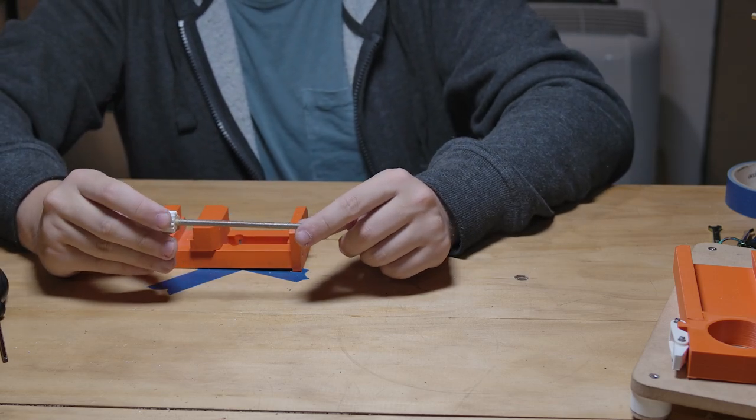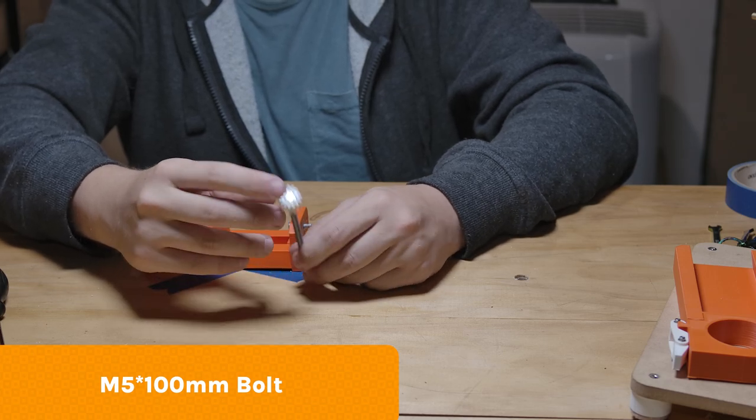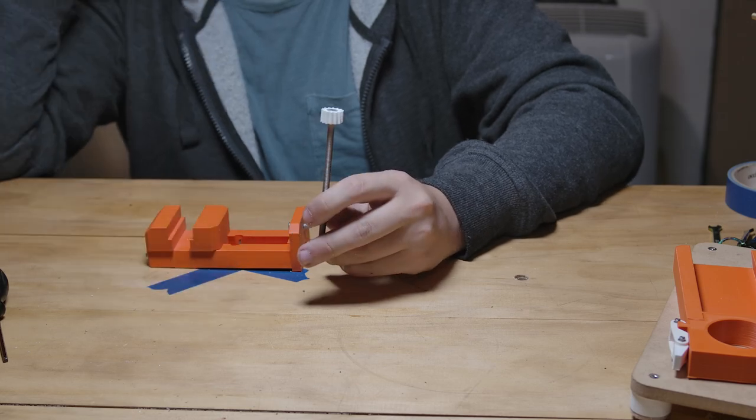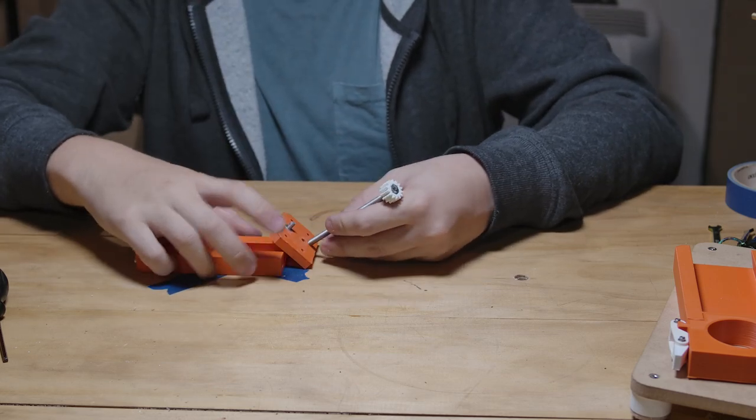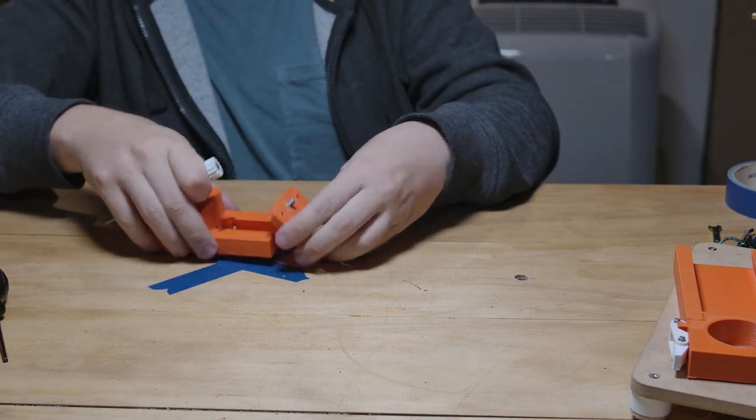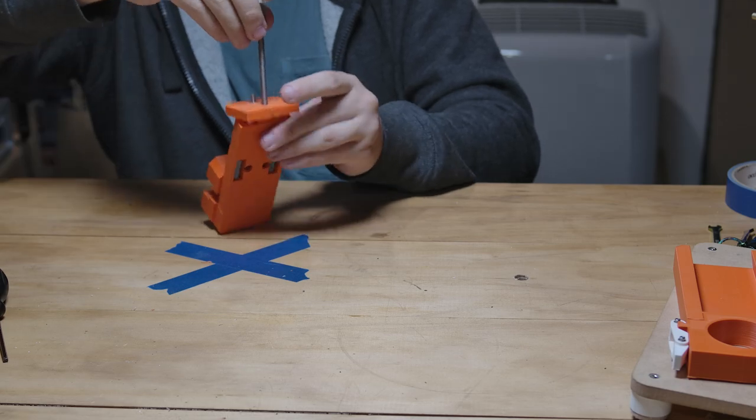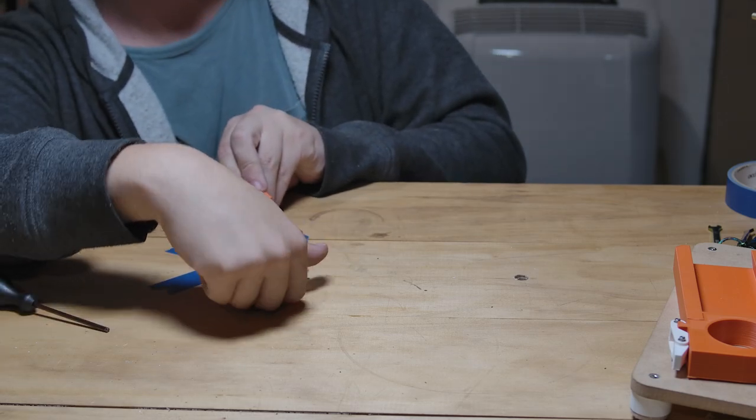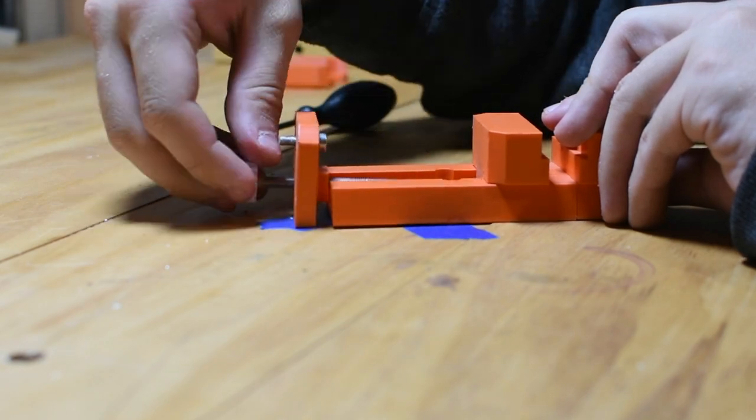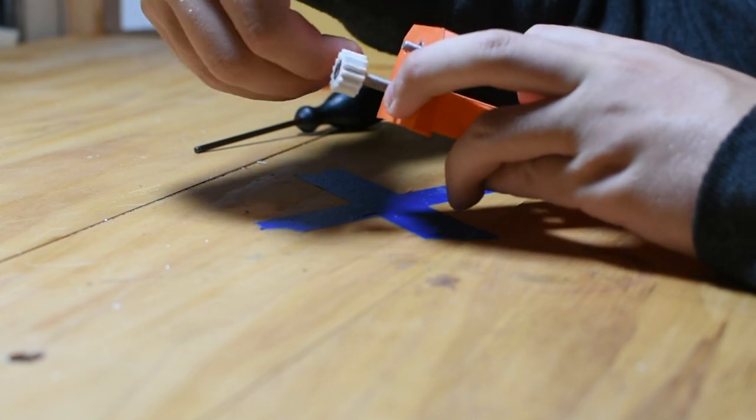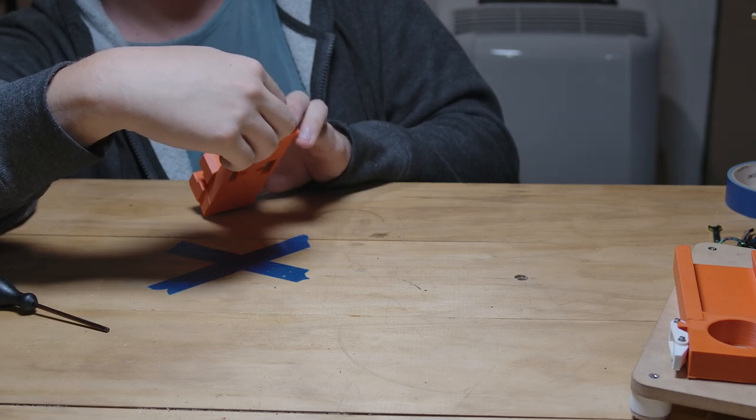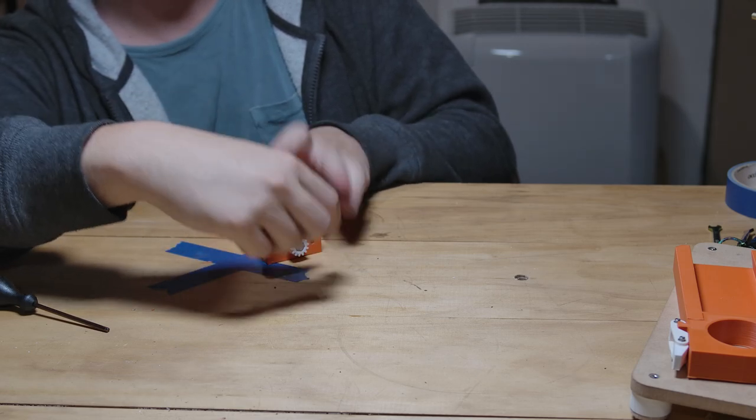This is a five millimeter bolt, and the head slots around this gear here. I've glued it on, you don't have to, it's up to you. We're going to take that and we're just going to thread that through here just like this.